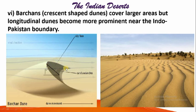Now we will talk about barchans. A barchan is a kind of crescent-shaped dune, commonly found in the Thar Desert. This picture is showing the barchan — you can see it is crescent-shaped, like a crescent moon. These crescent-shaped dunes are called barchans.